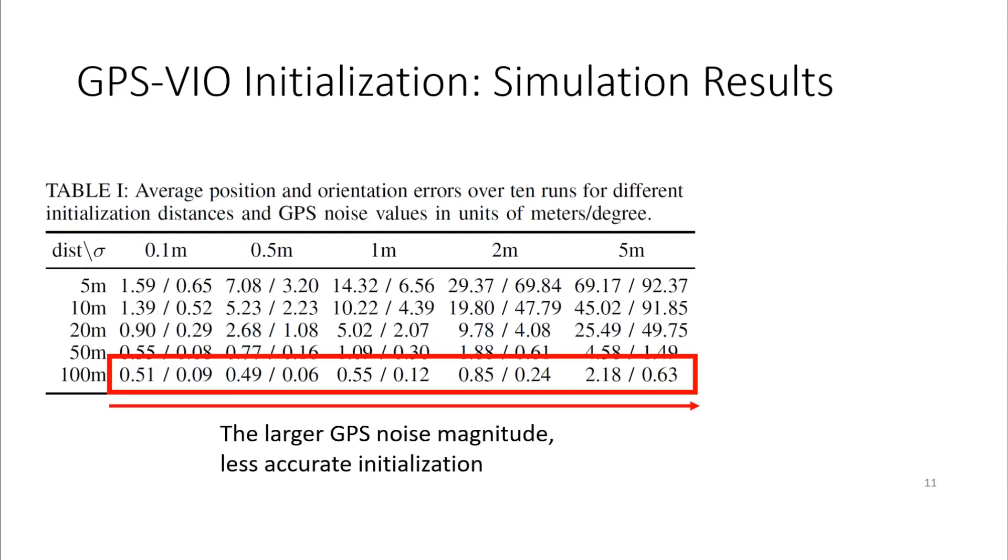When the GPS measurement has large noises, it might not be possible to find accurate reference frame transformation from short trajectory because it is buried by the noises. In our simulation, it is shown that the larger GPS noise magnitude, we have less accurate initialization results.